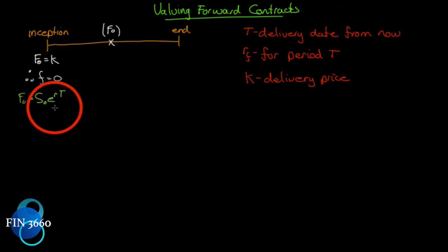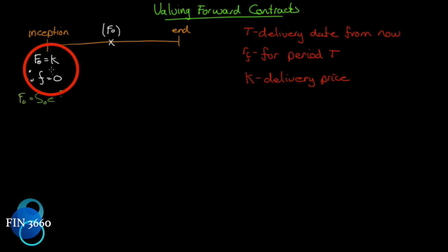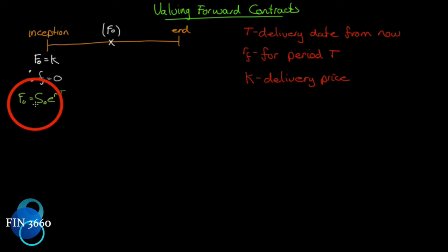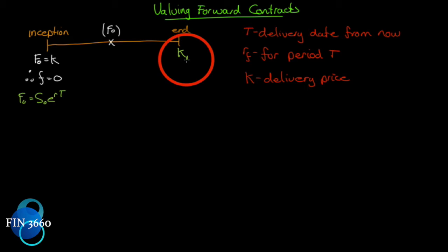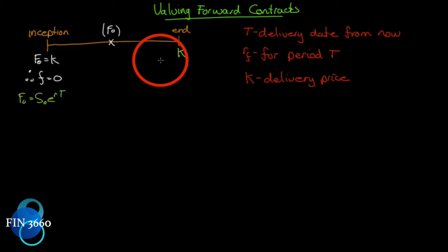The futures price is a function of three input variables: the spot price, the risk-free interest rate, and time. The contract has a value of zero on the first day — the moment you calculate it and enter into it, because all three inputs are set at that point. At the end of the period, you, as the holder, get to buy the underlying asset at price K1, which was priced way back at inception.